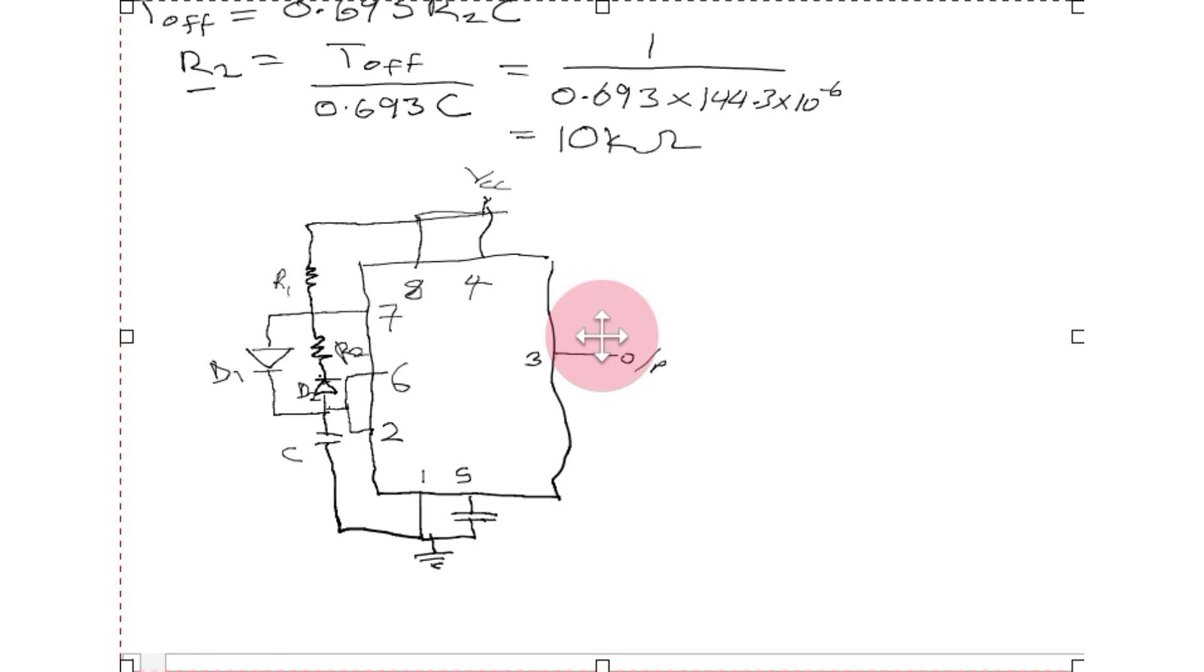From here we have our R1 which we assumed it to be 10 kilo ohms. Here we have our R2 which we got it to be 10 kilo ohms. And this capacitor right here we got it to be 144.3 microfarad. This one we know it to be 0.01 microfarad, it is a constant, so don't be afraid. This is how our astable multivibrator will look like. I hope you enjoyed the video. Thanks for watching.